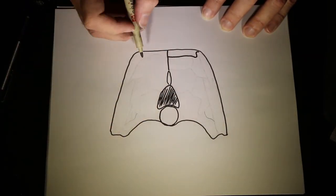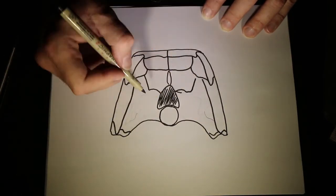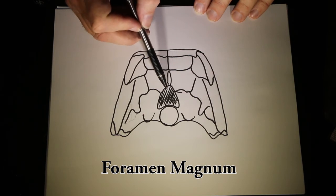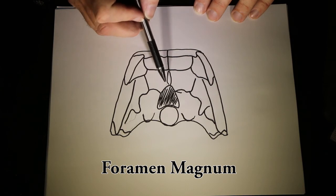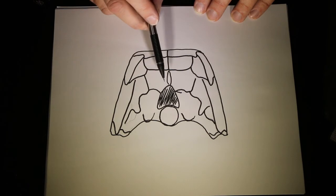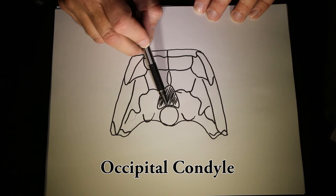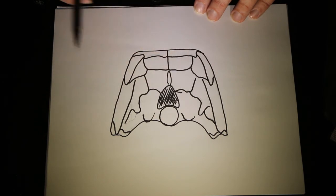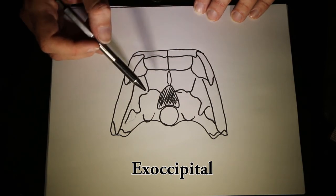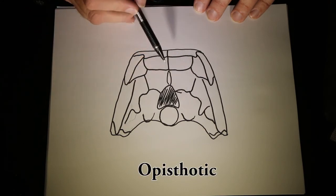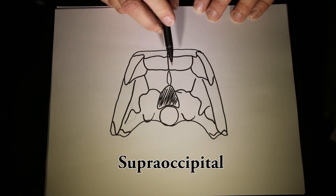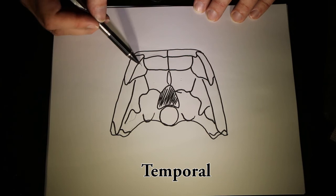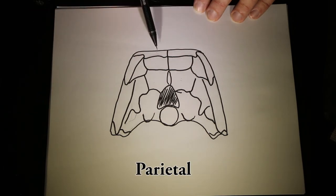Let's now draw the back of the braincase — the back of the skull. This opening here is the foramen magnum, which is where the spinal cord comes out of the skull to form the central nervous system. Below that is a big ball called the occipital condyle, which articulates with the first cervical vertebra to form the neck. On either side we have the exoccipital, the opisthotic above that, and the supraoccipital which is up high. These long ones are the squamosal seen in the back, as well as the supratemporal, the temporal, and the postparietal. At the top of the braincase are the paired parietals.